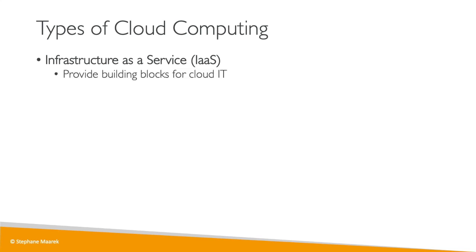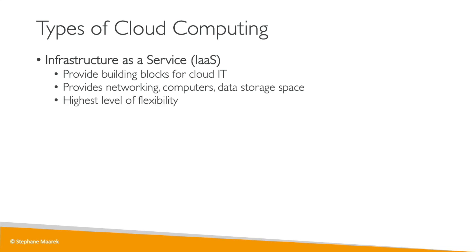With IaaS, we're going to provide networking, computers, and data storage space in its raw form. And using these building blocks — these building Legos — we're going to be given a very high level of flexibility and we can easily understand how we can migrate from traditional on-premises IT to the cloud. That is the first service we'll see in this course, which is going to be EC2.